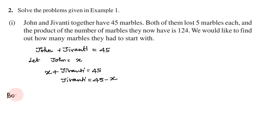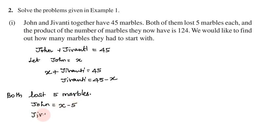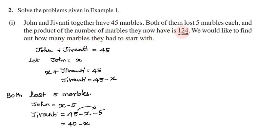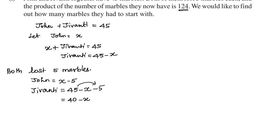Both lost 5 marbles. After losing 5 marbles, John has x minus 5 marbles, and Jivanti has 45 minus x minus 5, which equals 40 minus x marbles. So John's marble count is x minus 5, and Jivanti's marble count is 40 minus x.